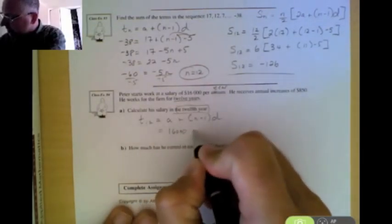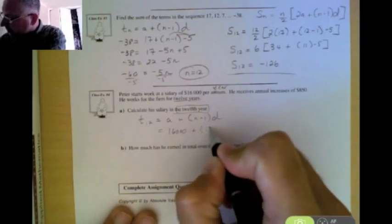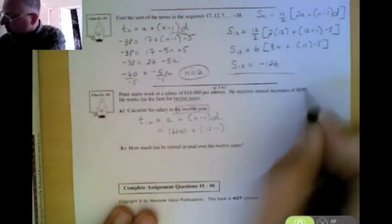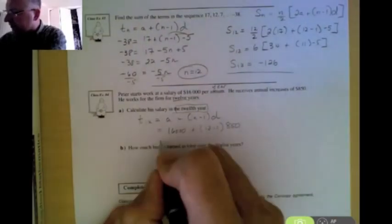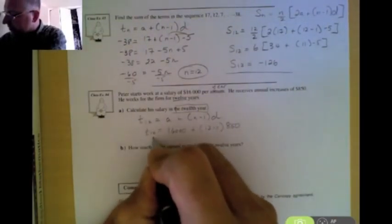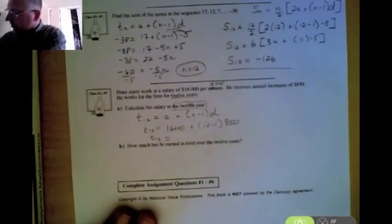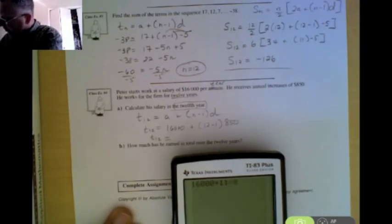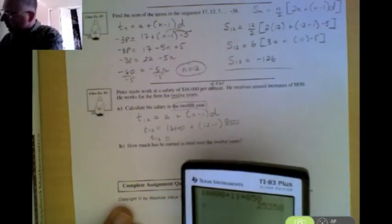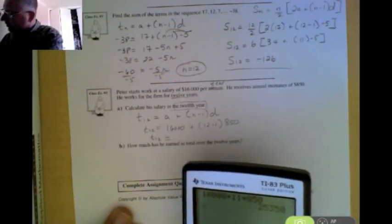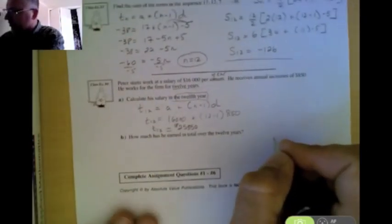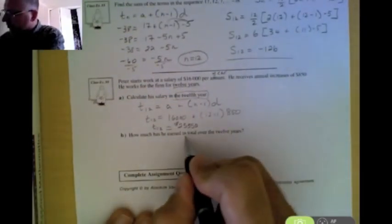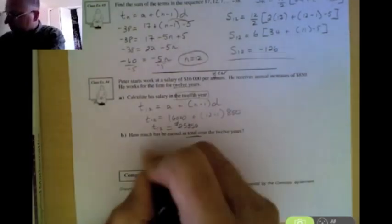So if we now take out our calculator and we calculate this, we get $16,000 plus 11 times $850, tells us he makes $25,350 in his 12th year working for this particular company. Now it says they want to know the total amount he makes in 12 years. So they want to know s of 12 in this case. And we know the first term, which is $16,000.